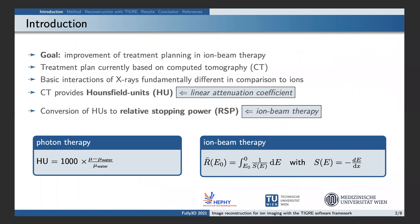Currently, a treatment plan is based on conventional CT, which provides Hounsfield units that are based on a linear attenuation coefficient of the material. Ion beam therapy is based on the stopping power of the material, which describes the energy loss of an ion per unit path length. The stopping power is usually expressed relative to water, referred to as relative stopping power. While conversion from Hounsfield units to relative stopping power leads to range uncertainties in the treatment plan, ion CT allows to directly measure the requested quantity.